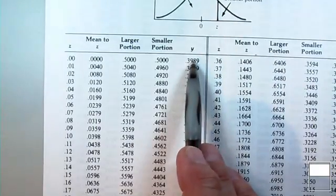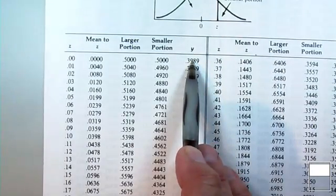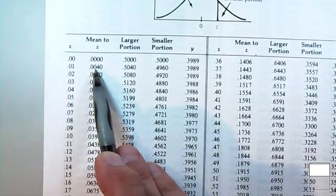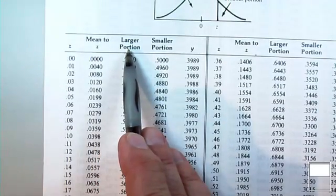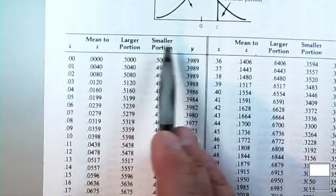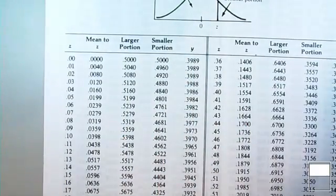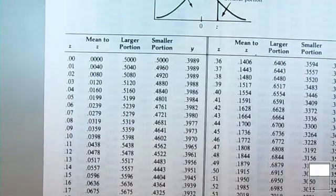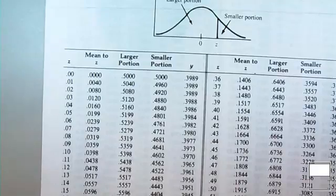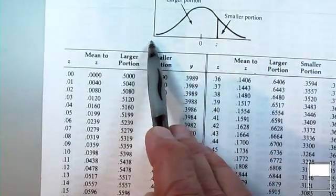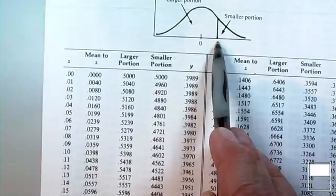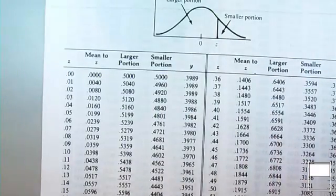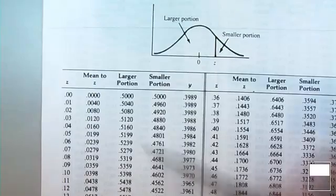Let's ignore the column labeled 'y' and the column labeled 'mean to z' for now, and focus on the two columns that talk about larger portion and smaller portion. When you have a z-score and want to know the proportion of scores that are below it or above it, you have to know two things in order to use this table, because inside this table are all these proportions.